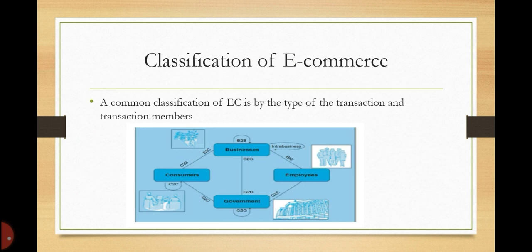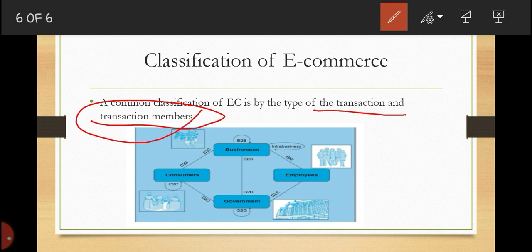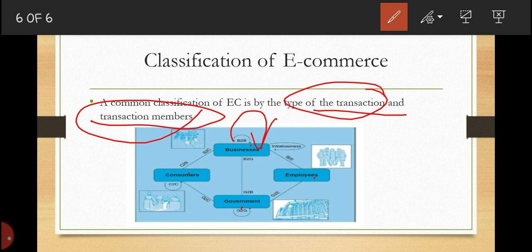Now let us talk about electronic commerce classification. A common classification of electronic commerce is by the type of transaction and transaction members. We have consumers, businesses, employees, and the government involved. For example, business-to-business means transactions between and among organizations — such as a company that buys most of its parts through electronic commerce and sells its products to businesses and individuals.